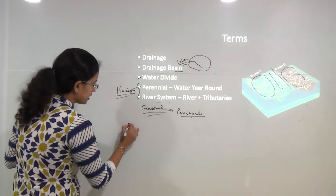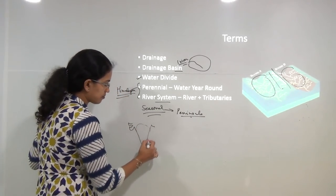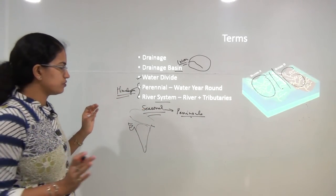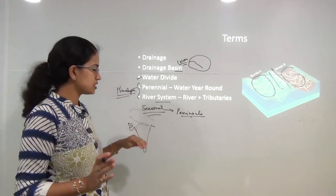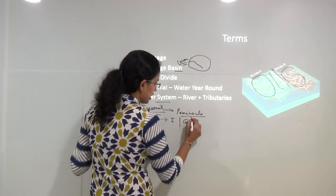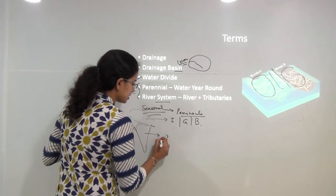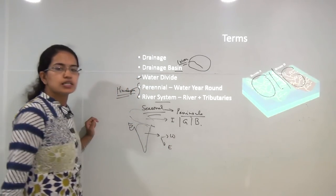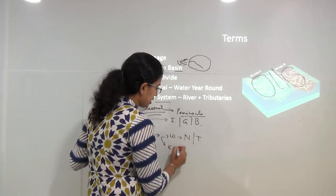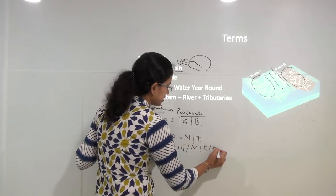A region surrounded by water on three sides is known as a peninsula. When we talk about the river system, we classify it into two sections: the Himalayan section and the peninsular section. Under the Himalayan section, the important rivers are Indus, Ganga, and Brahmaputra. The peninsular region has two bifurcations: west-flowing rivers — Narmada and Tapti — and east-flowing rivers — Godavari, Mahanadi, Krishna, and Kaveri.